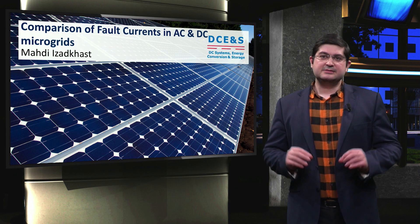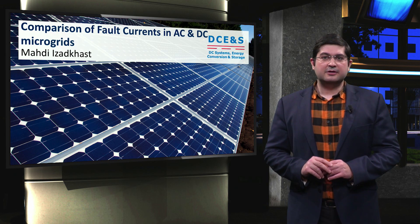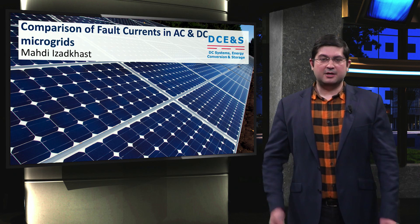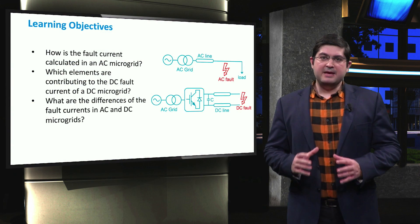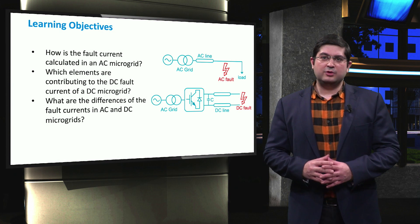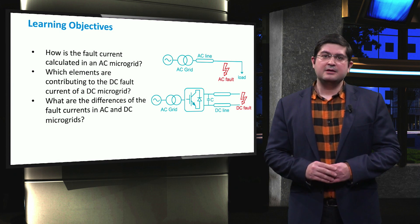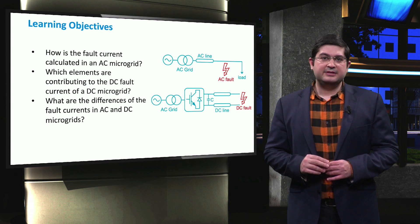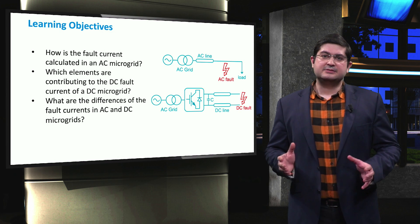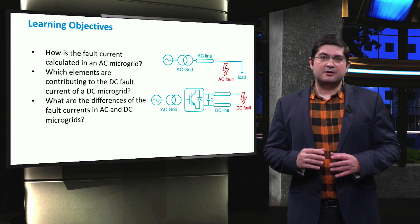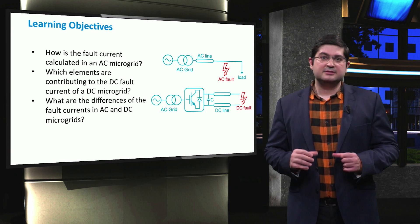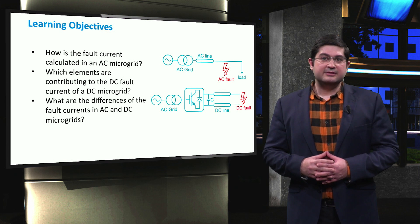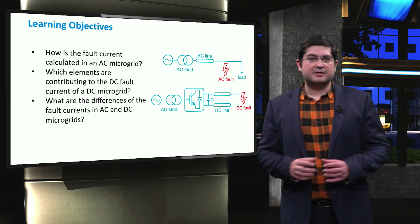In this video, we analyze and compare the fault currents provided by the external grid in both AC and DC microgrids. The main learning objectives will fall under three main questions. Firstly, how is the fault current calculated in an AC microgrid connected to an external grid? Secondly, which elements are contributing to the DC fault current of a DC microgrid? Thirdly, what are the differences of the fault currents in AC and DC microgrids?